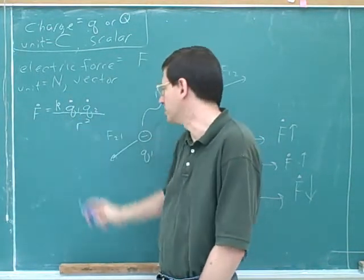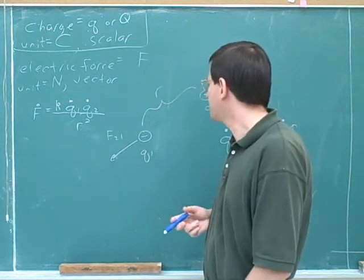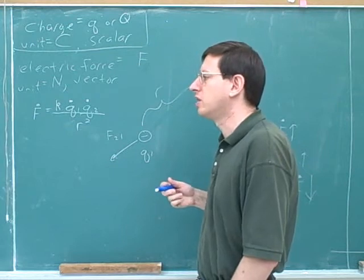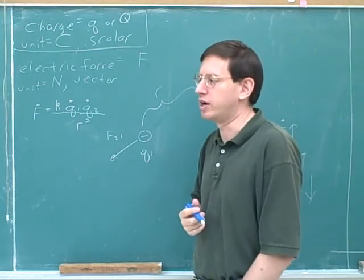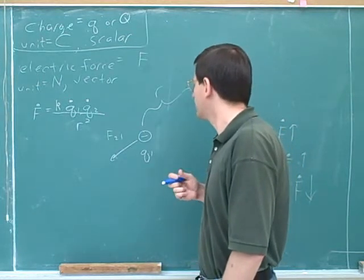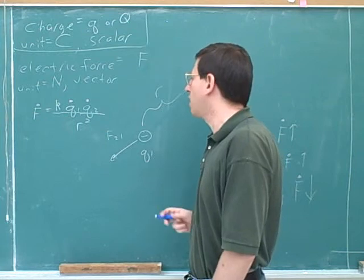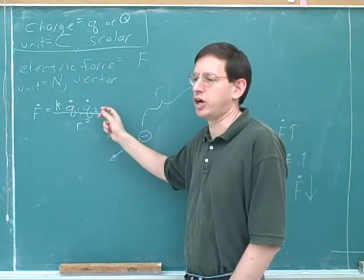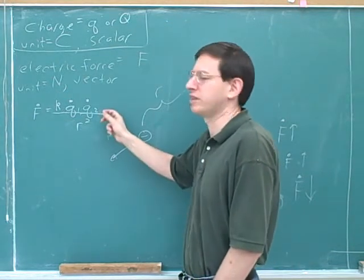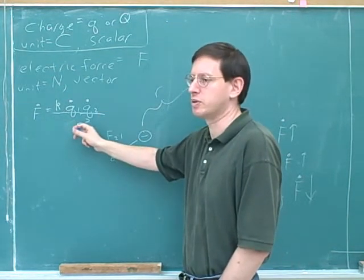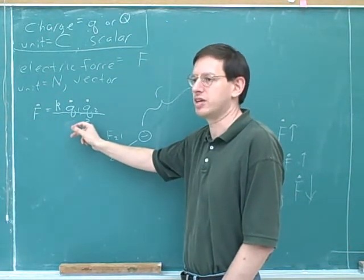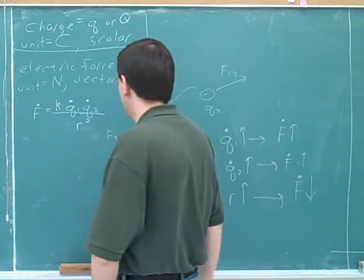This formula is for point charges. You may also start learning how to deal with more interesting shapes like spheres, infinite lines, or infinite sheets, but we'll keep focusing on points. Coulomb's law also works for spheres of charge as long as the charges are distributed symmetrically. R is the distance between the two points; if dealing with spheres, it's the distance between their centers, not their surfaces.